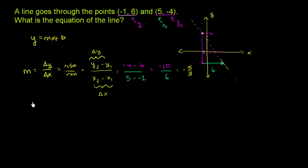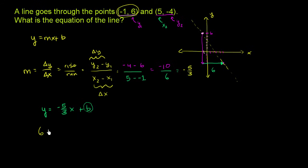So we now know our equation will be y equals negative 5 thirds x plus b. We still need to solve for our y-intercept to get our equation. To do that, we can use the information that we know — we can use the fact that the line goes through the point negative 1 comma 6. We know that when x is equal to negative 1, y is equal to 6. So substituting into negative 5 thirds times x: when x equals negative 1, y equals 6.